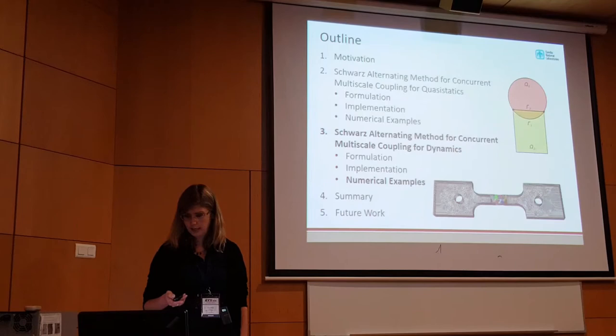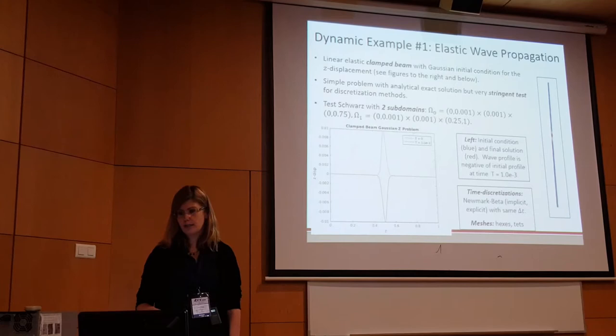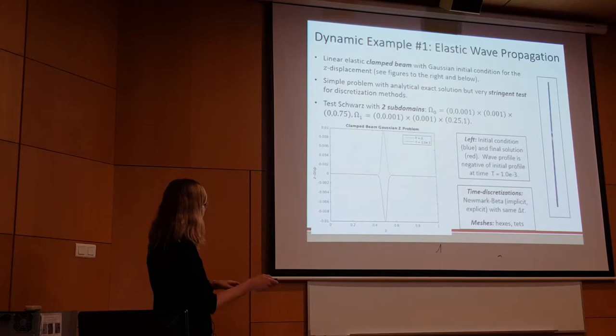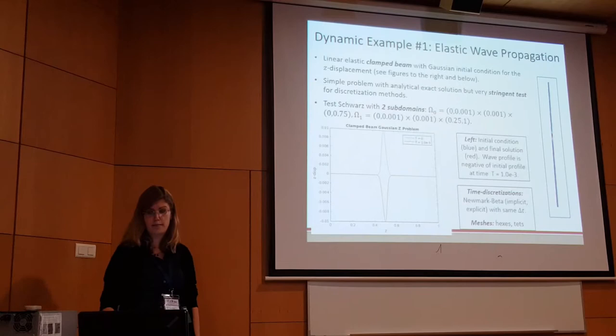For dynamics, I'll again show three examples, starting with verification and going to production. The first is linear elastic wave propagation in a clamped beam. We put a Gaussian initial condition on the beam, which will propagate, reflect, and eventually produce a reflection mirror image of the Gaussian. This problem has an analytical solution, and it's a very stringent test for discretization methods because any artifacts introduced by the method will show up here. We're going to try all sorts of couplings: implicit-explicit, hex-tet, and so on.